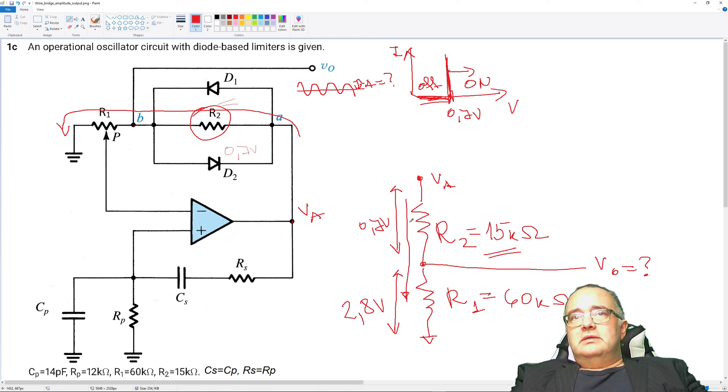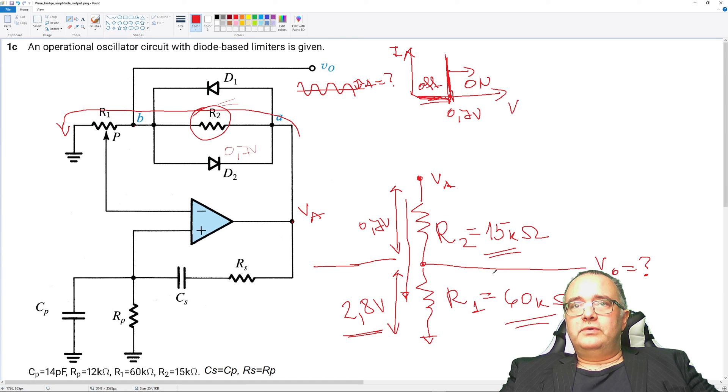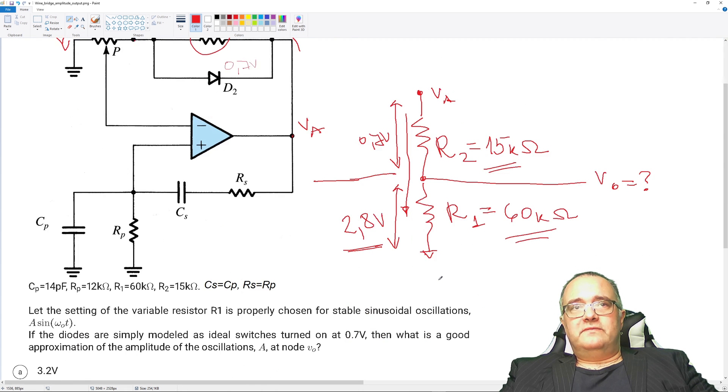So this means that this current creating 0.7 volts for 15k ohm, for four times bigger resistor will create four times bigger voltage drop, which means that this level here must be 2.8 volts. From ground to Vout will be 2.8 volts, and this is a property of the resistor divider.